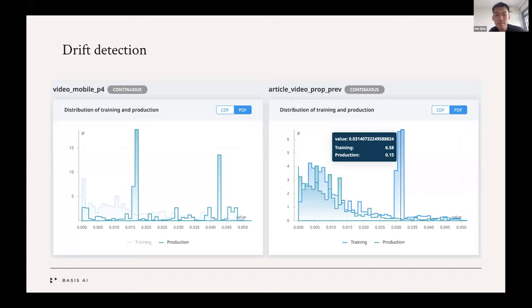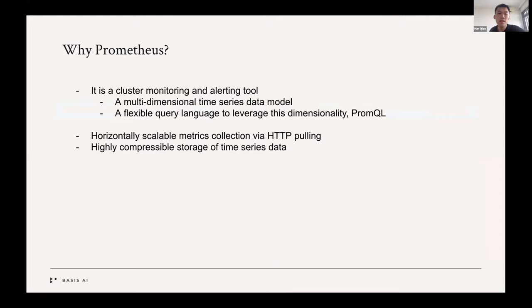So why do we choose Prometheus for this problem? This is a cluster monitoring and alerting tool. It has two major components. One is a multi-dimensional time series data model. This allows you to add arbitrary labels to your time series metric and each label contributes to one dimension. Prometheus also offers a flexible query language that you can use to aggregate time series metric across different dimensions.